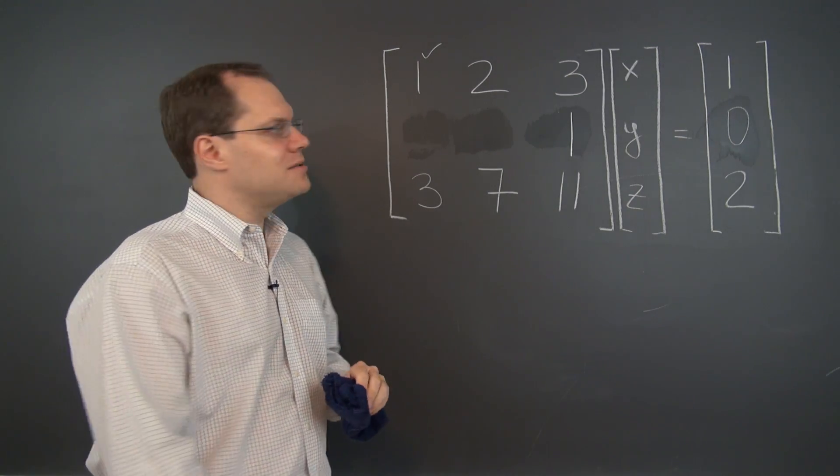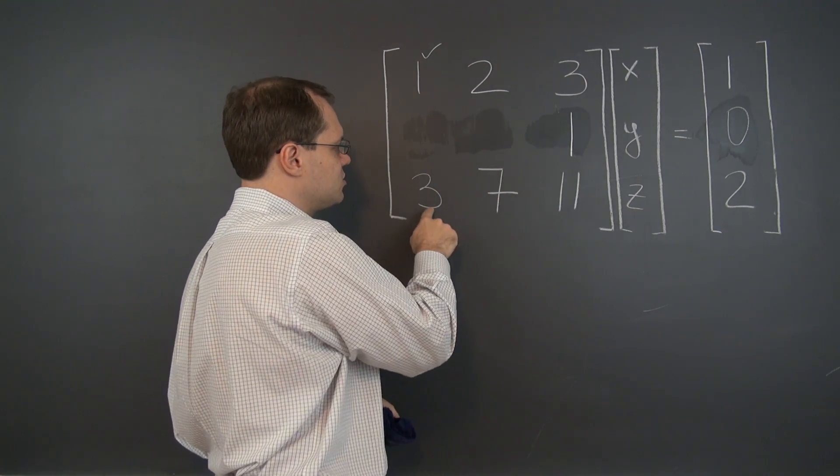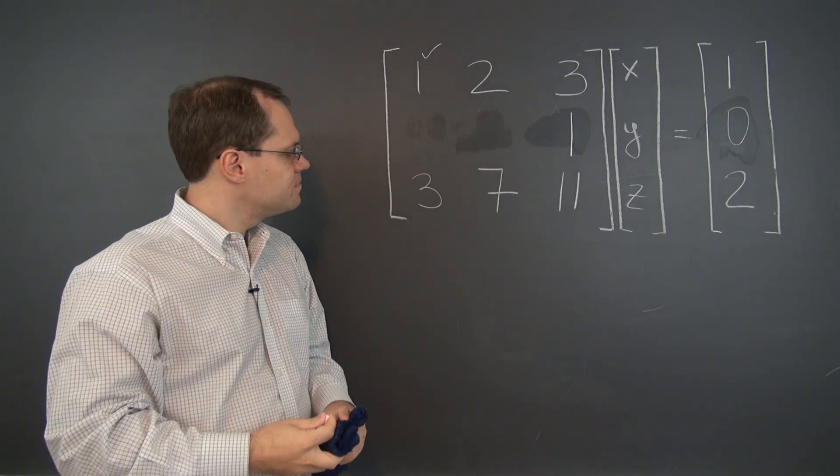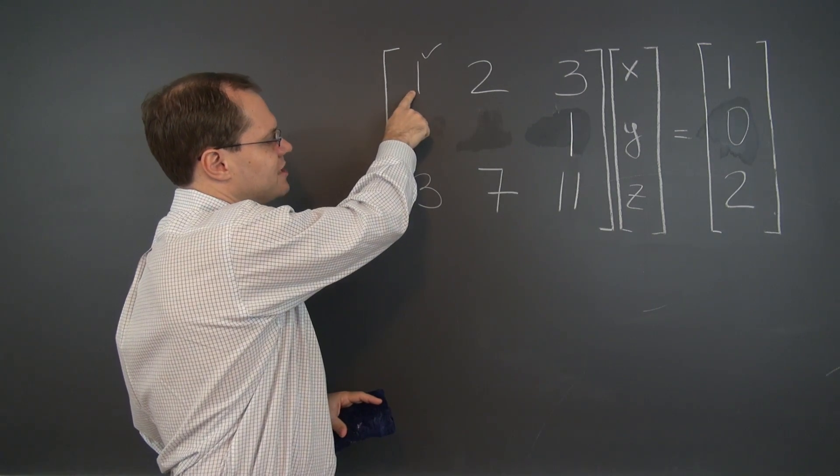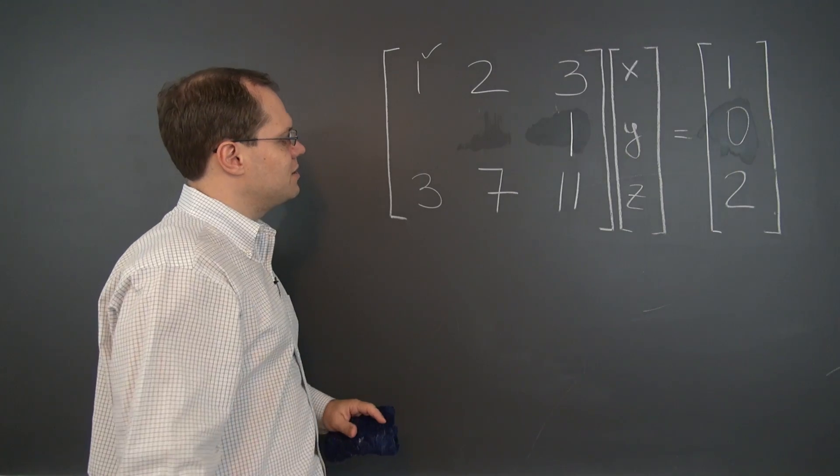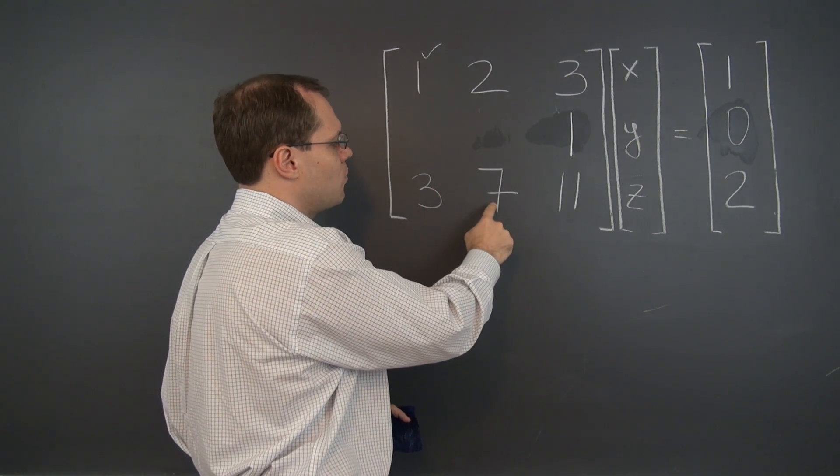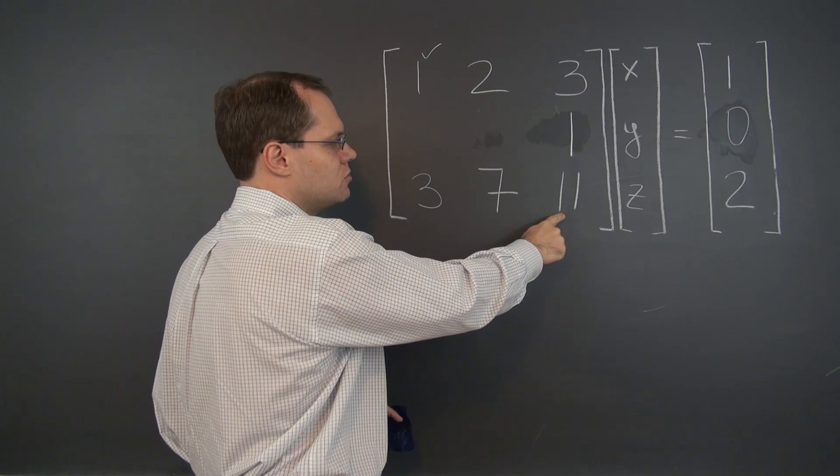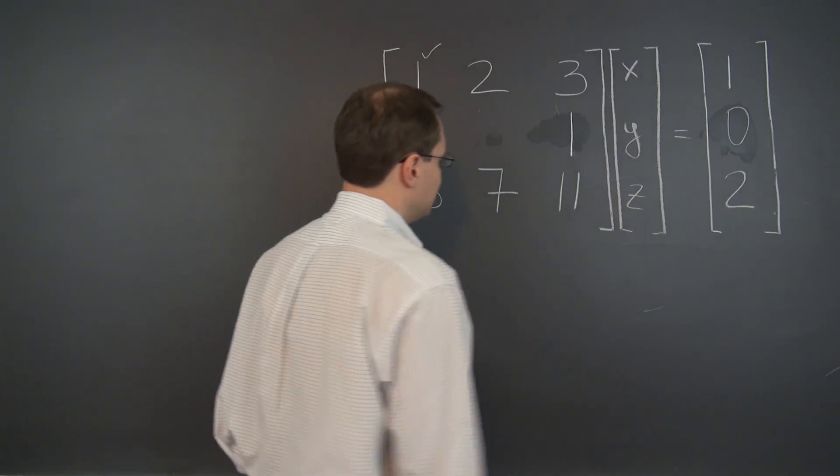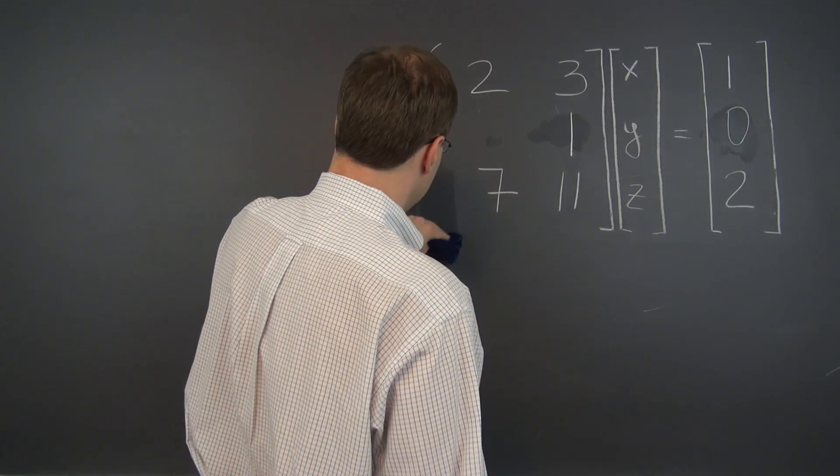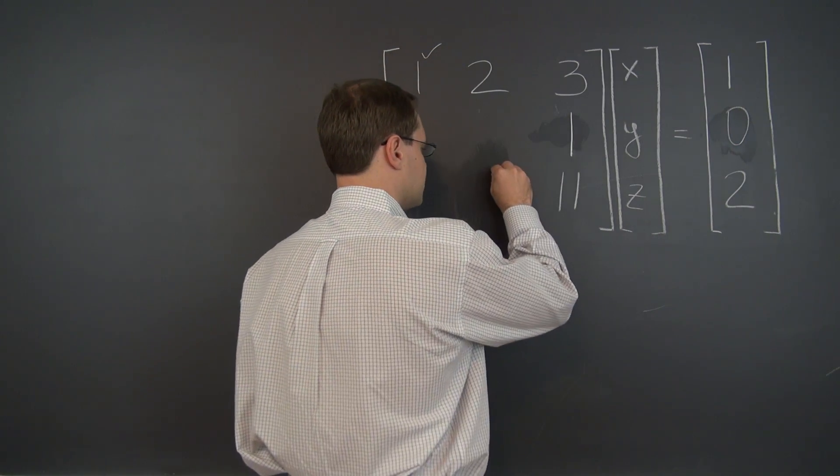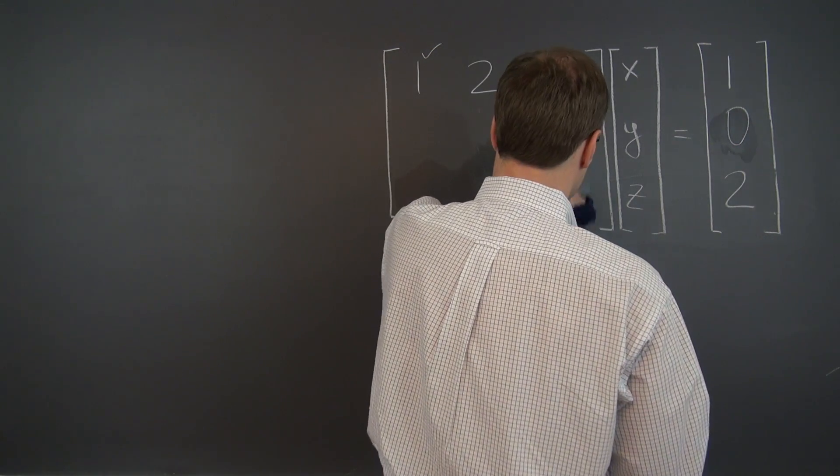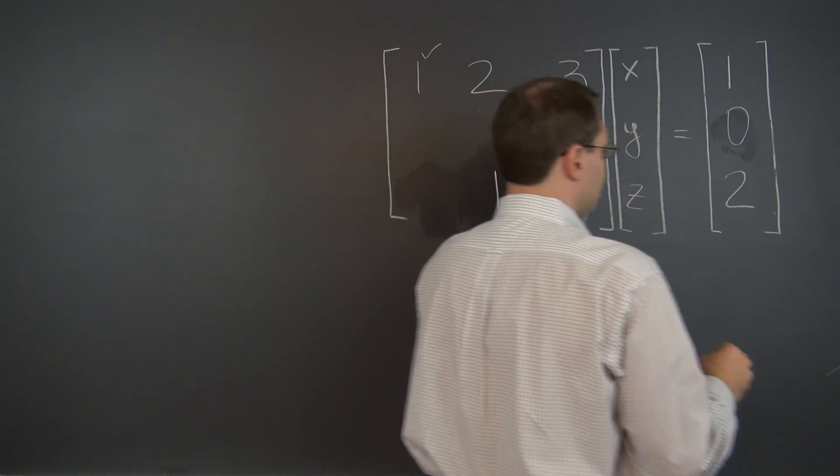Let's proceed with Gaussian elimination and use this pivot to eliminate the three. And of course you do that by subtracting three of this row from the last giving us zero by design, one, two, minus one, zero, one, two, minus one.